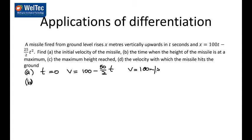The second question says find the time when the height is at the maximum. The height is at the maximum when the velocity is equal to zero. So it's a matter of solving 100 minus 25t equals zero, giving t equal to 4 seconds.